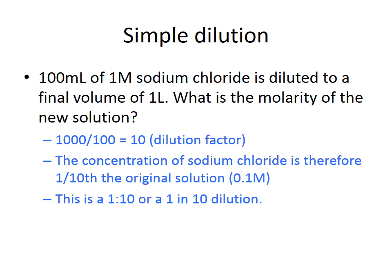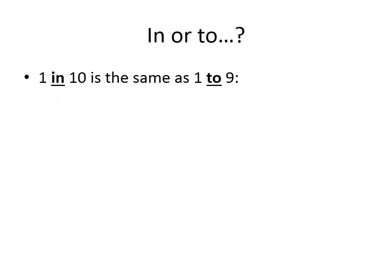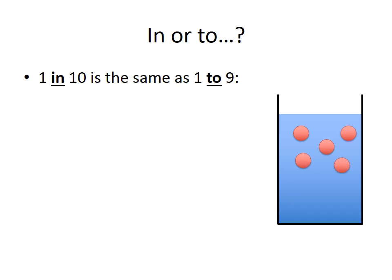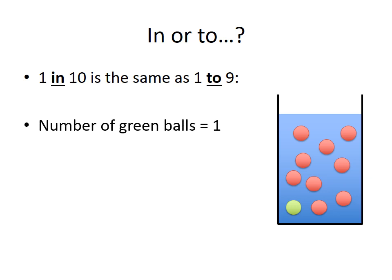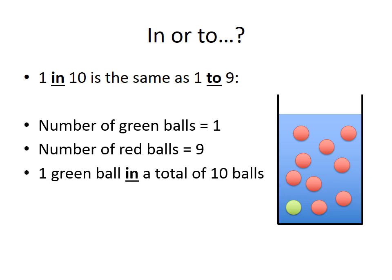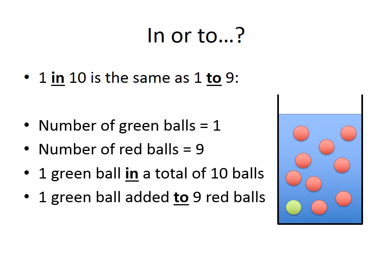This can be written as a 1-in-10 dilution. A concept many students struggle with is the difference between 'in' and 'to': a 1-in-10 dilution is the same as 1-to-9. Imagine a beaker with nine red balls — you add one green ball, so there is one green ball in a total of ten balls, but you added one green ball to nine red balls. Therefore, 1-in-10 and 1-to-9 represent the same dilution factor.